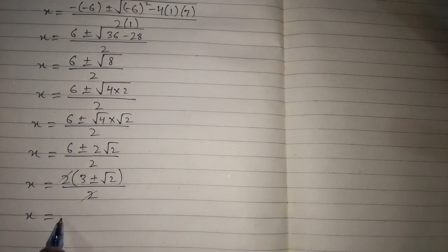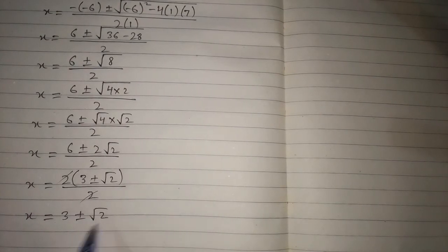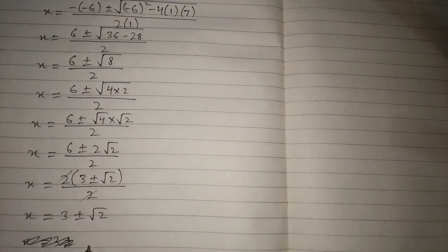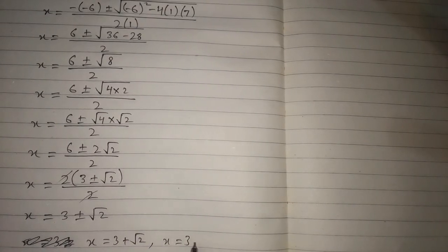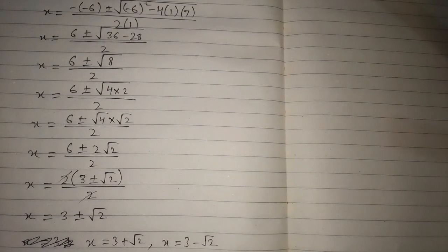And we have x is equal to 3 plus or minus the square root of 2. So the value of x is 3 plus root 2, and the other value of x is 3 minus root 2. So this is the solution of the given equation.